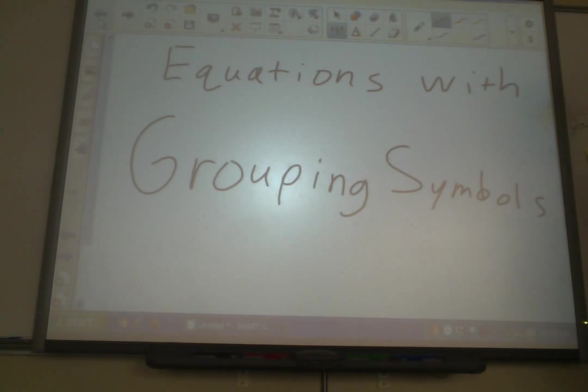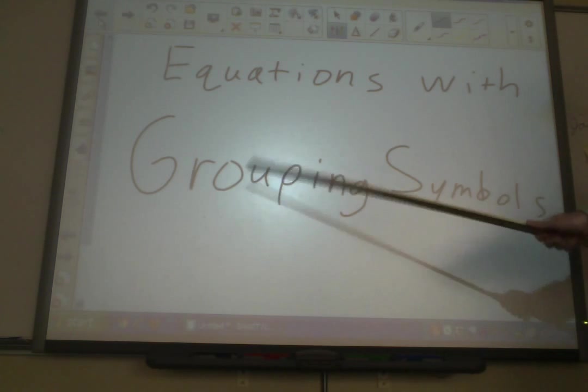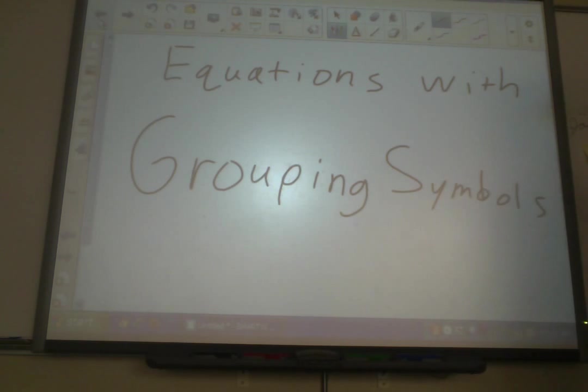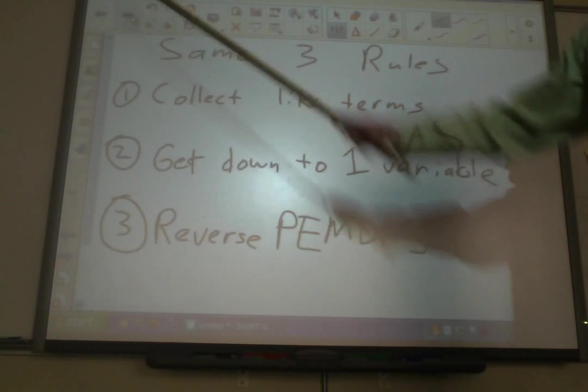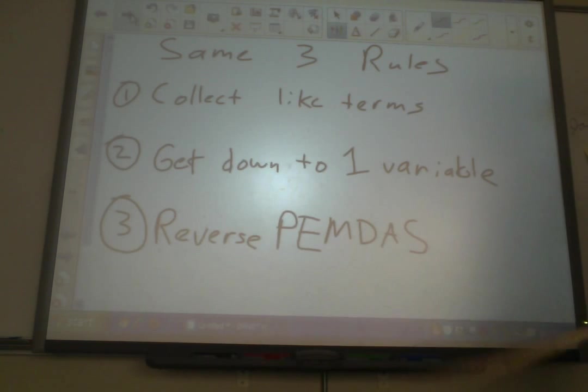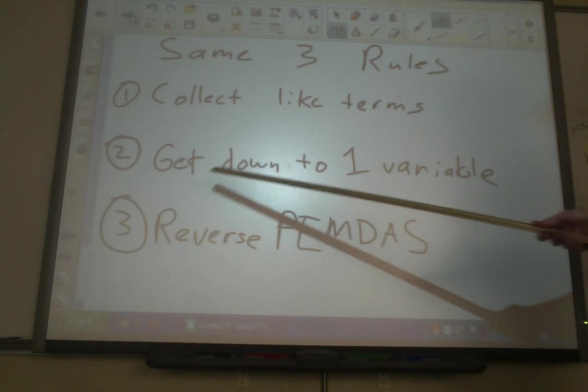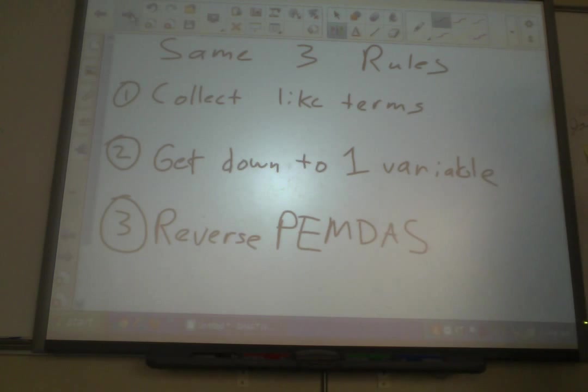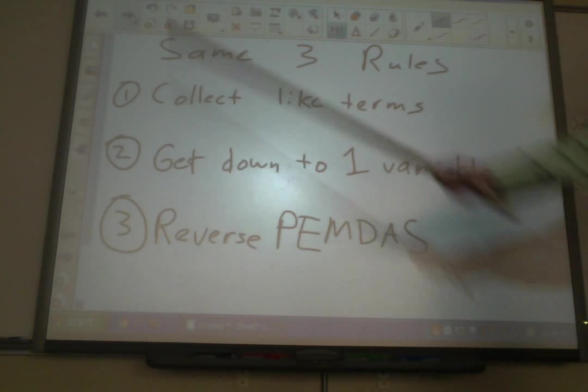Okay, today we are still solving equations, but today we are solving special equations that use grouping symbols. So nothing's actually going to change here based on what we were doing before. We still have the same exact three rules in the same order. First, you collect like terms if you can. Second, you're going to get it down to one variable if there's more than one variable to start off with. And finally, you solve for that variable using reverse PEMDAS. Let's go ahead and look at some examples.